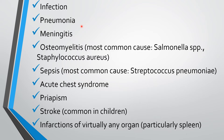The second acute symptom category is different types of infections. These can include pneumonia, meningitis, osteomyelitis, and sepsis. For osteomyelitis, the most common cause — always remember for MCQ — is Salmonella and Staphylococcus aureus. For sepsis, the most common cause is Streptococcus pneumoniae in children with sickle cell anemia. Other acute symptoms include acute chest syndrome, priapism, stroke, and infarctions of virtually any organ, especially the spleen.